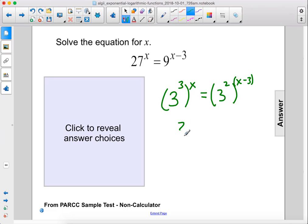So what we're going to do is this becomes 3 to the 3x power. Remember, this is 3 to the 2x minus 6 power because the 2 has to multiply to the whole x minus 3 part here.